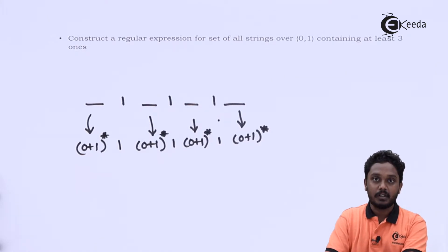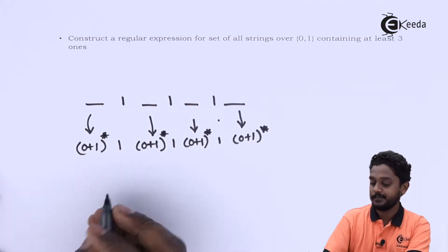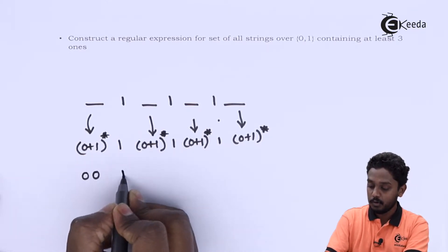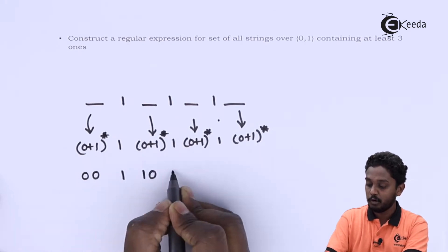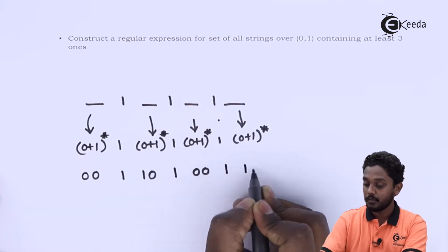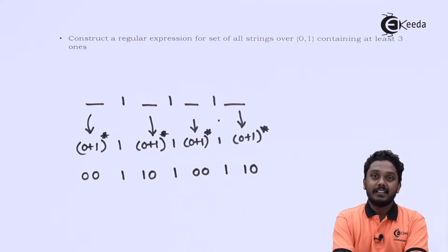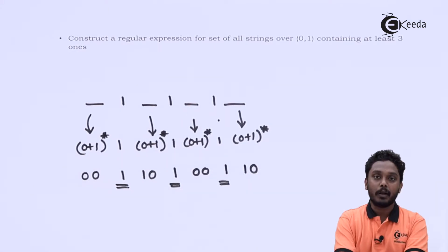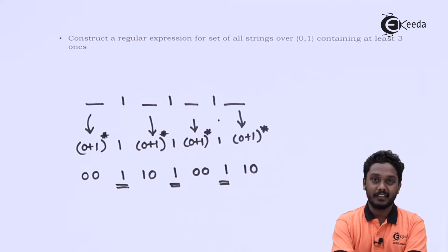Let's see a few strings constructed by this regular expression. We are generating 0 0 followed by a 1, followed by 1 0, followed by a 1, followed by 0 0, followed by a 1, followed by 1 0. You can see that there are at least 3 ones generated by this string. The ones which are not part of (0+1)* are always generated mandatorily, and hence we can say the regular expression is generating the required kind of strings.